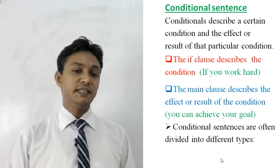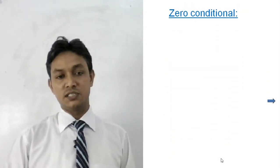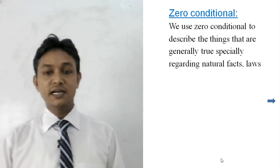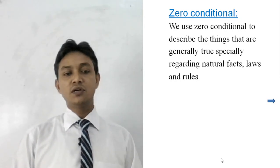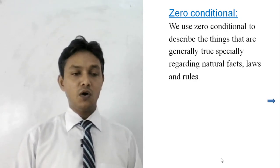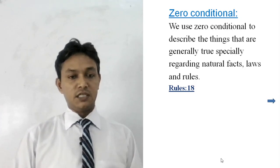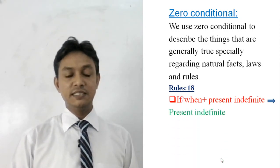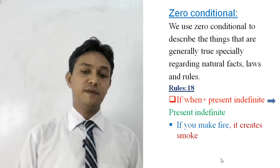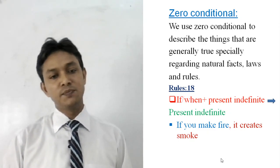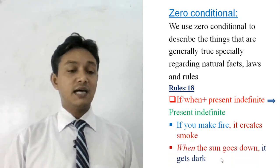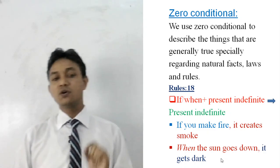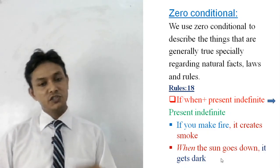Conditional sentences are often divided into different types. The first one is zero conditional. We use zero conditional to describe things that are generally true, especially regarding natural facts, laws, and rules. For example: 'If you make fire, it creates smoke' — that's a natural fact. 'When the sun goes down, it gets dark' — this is a general or universal truth.